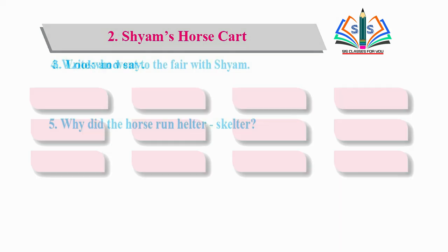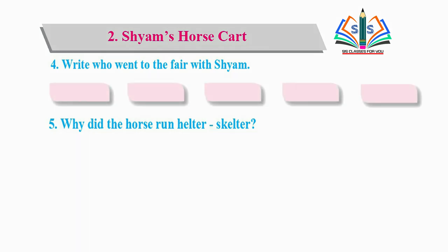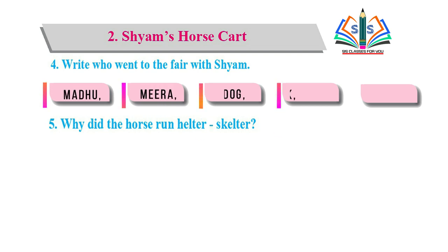Spring. Fourth question is: write who went to the fair with Sham. ہمیں یہاں انسر لکھنا ہے کہ Sham کے ساتھ fair میں کون کون گیا تھا۔ آپ لوگوں کو معلوم ہے نا کون کون گیا تھا - Madhu, Meera, the dog, the peacock and the frog.